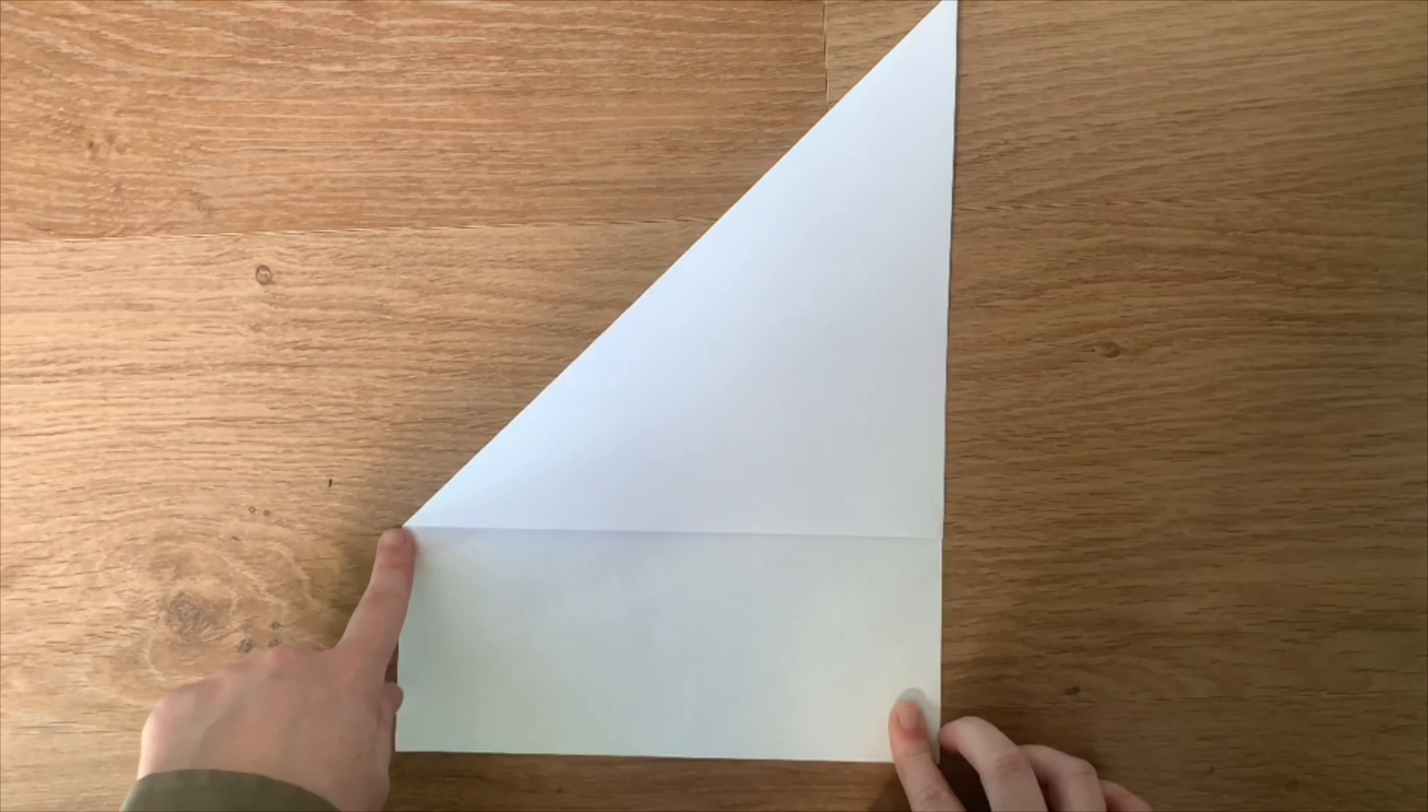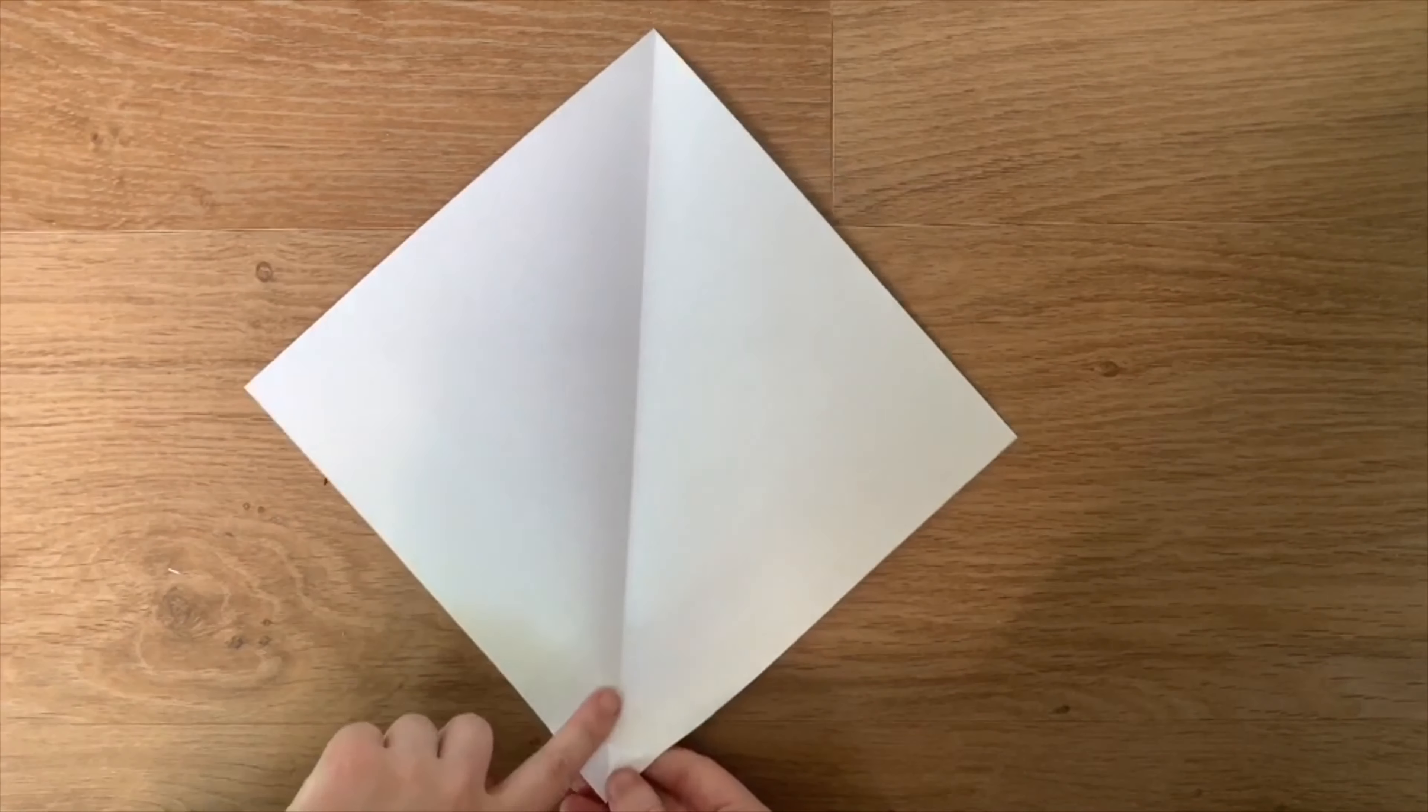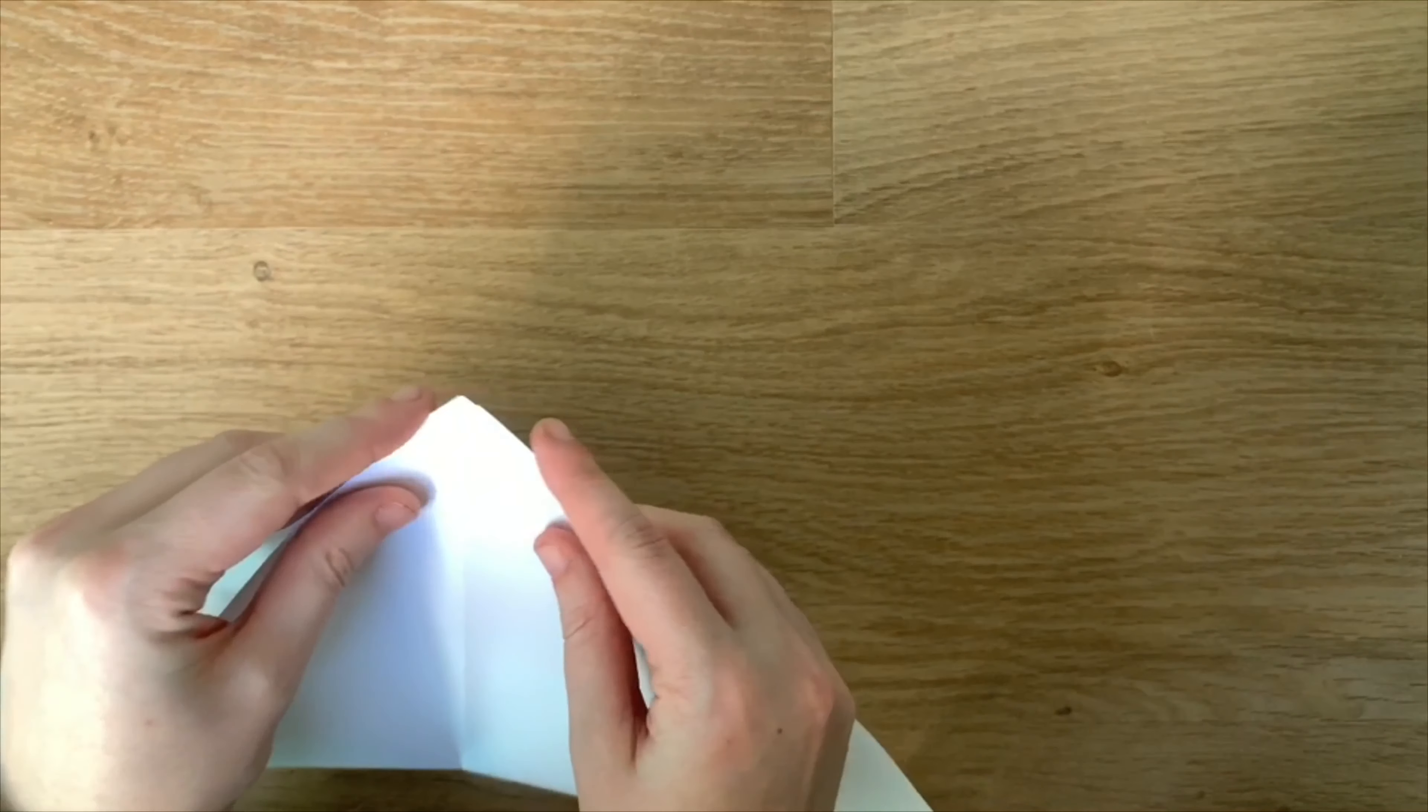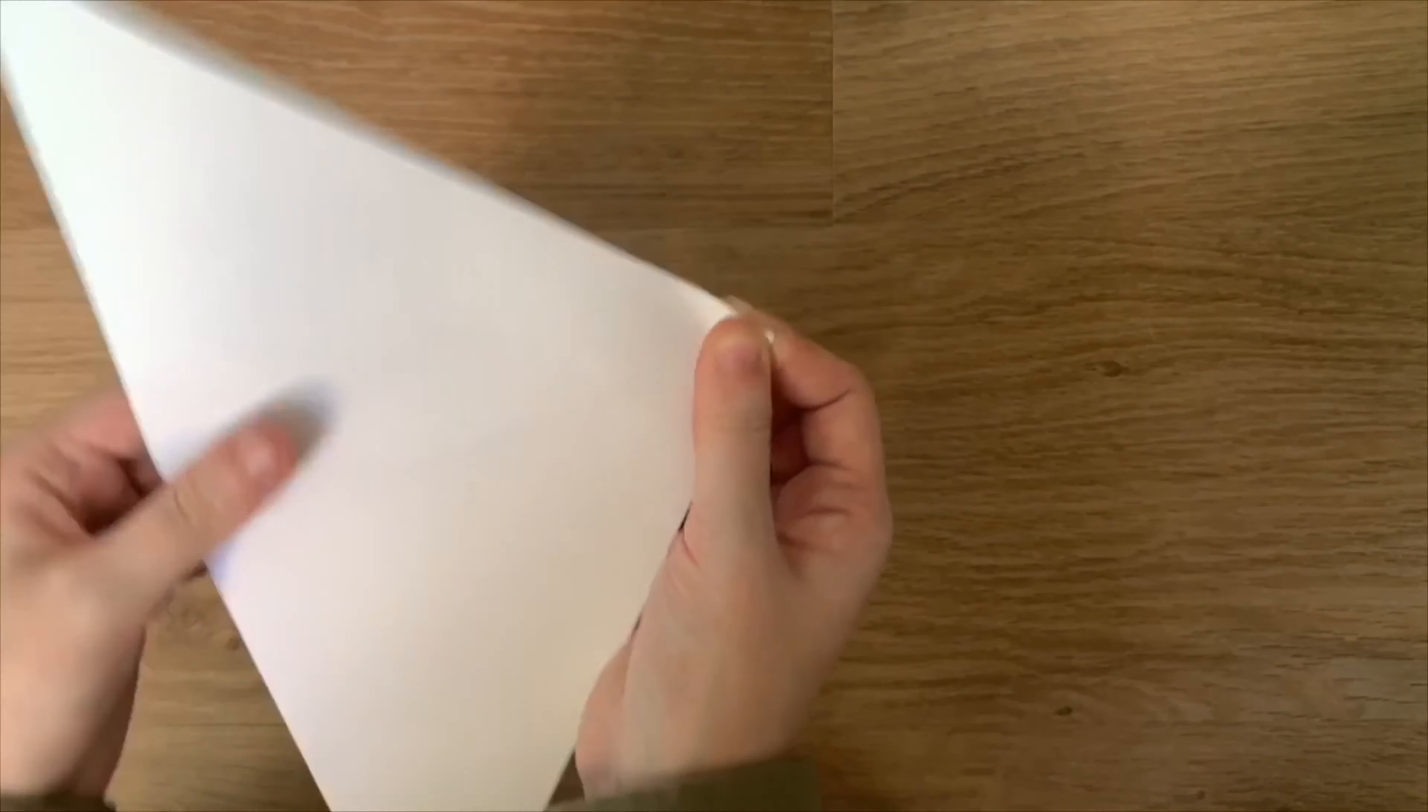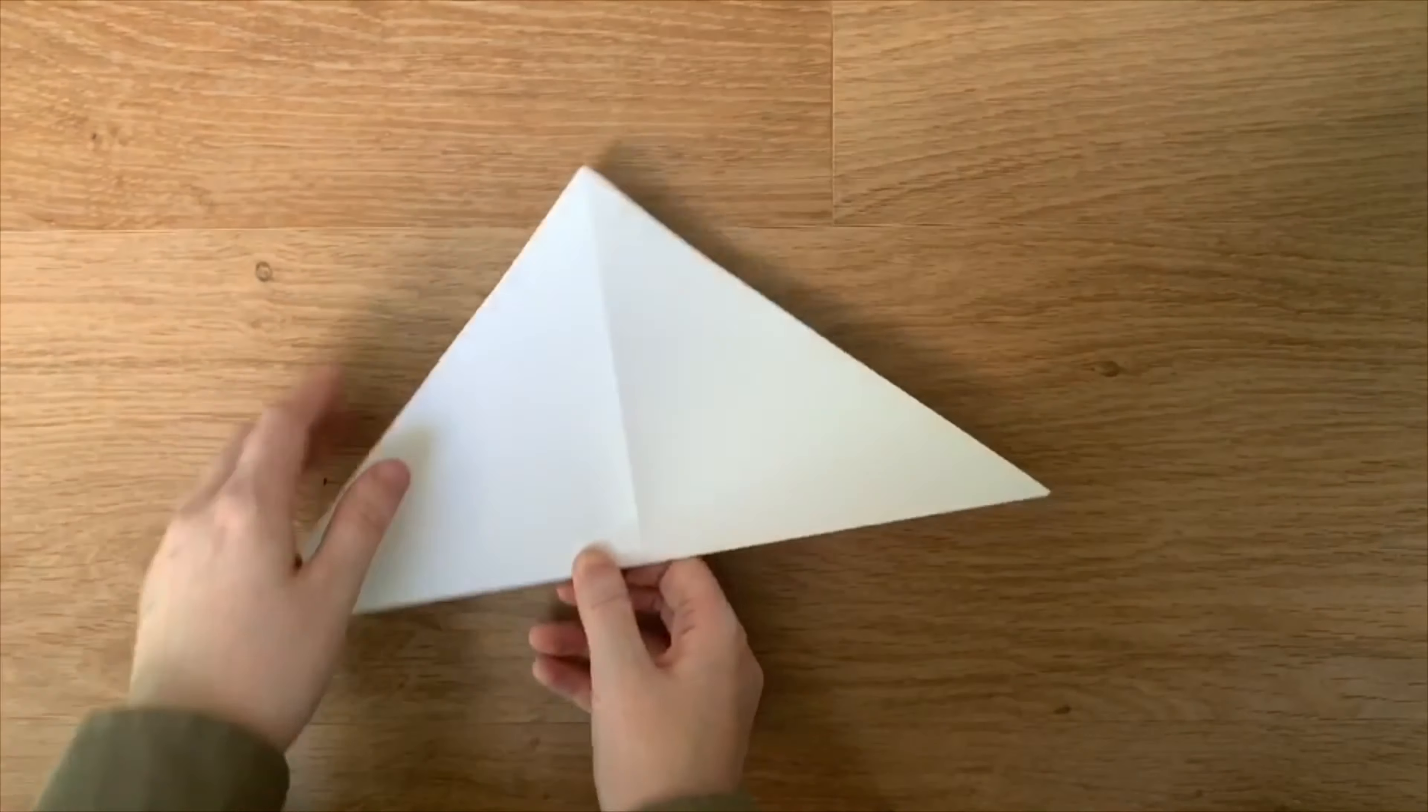Once you have your square, you see how it's folded like this. You then need to make this same crease along this side. So take this edge and fold it with this one. Don't worry if your edges don't quite match, but try and be as accurate as you can.